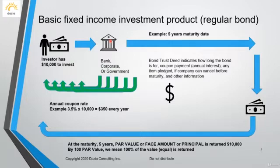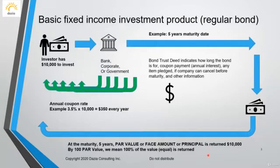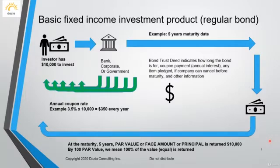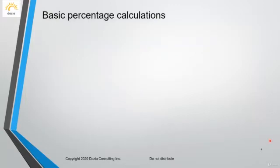After five years, the client gets back their original investment. The par value, face amount, or principal — these three words mean the same thing. If you see on your exam the terms par value, face amount, or principal, they all refer to the original amount the client put in, which is the amount they will get back. They put in ten thousand dollars and they will get back ten thousand dollars. Par value means 100% of the value is returned. So the client gets their full amount back plus the $350 per year for five years — that is how the regular bond works.